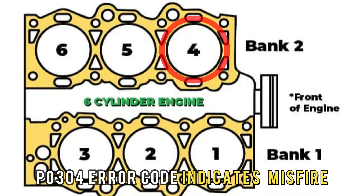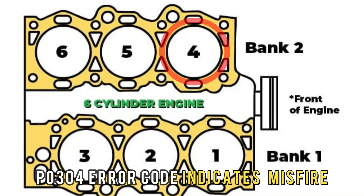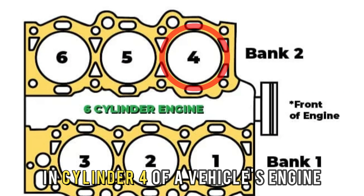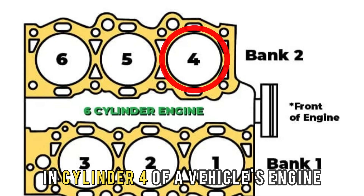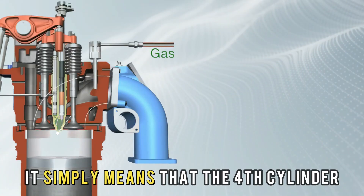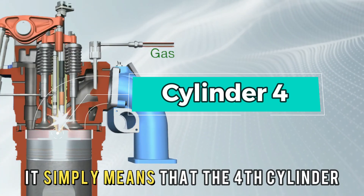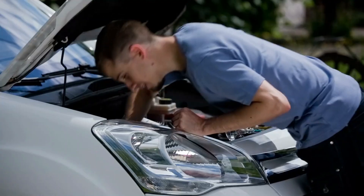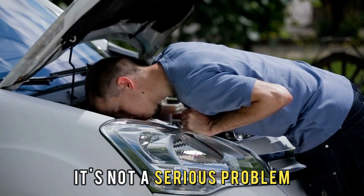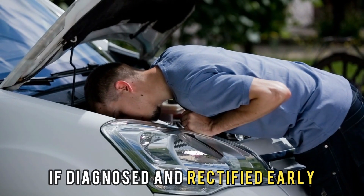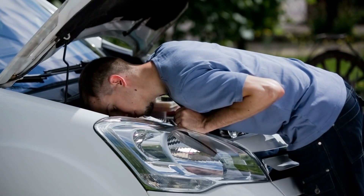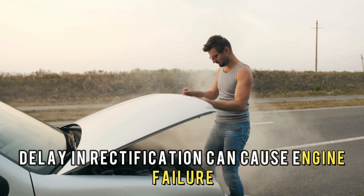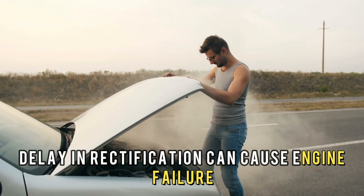The P0304 error code indicates a misfire in cylinder 4 of a vehicle's engine. It simply means that the 4th cylinder is not firing as it should. It's not a serious problem if diagnosed and rectified early, but a delay in rectification can cause engine failure.